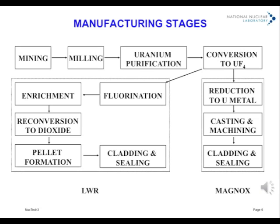However, no more Magnox is being made. For oxide fuel, uranium generally needs to be enriched — a process of separating most of the uranium-238 in the vapour phase, and so requiring the volatile hexafluoride, to which the tetrafluoride is converted. The enriched hexafluoride is then converted to oxide, formed into pellets, fitted into cladding tubes, and sealed.